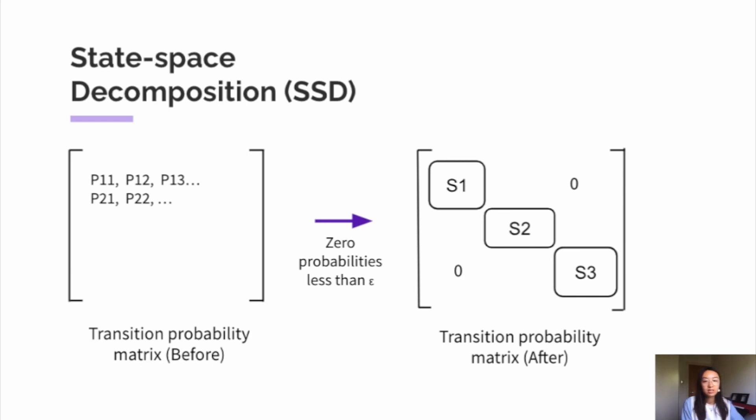However, since we set some of these probabilities to zero, we sacrifice accuracy in our learning as we have removed important information that could be vital to our optimal solution. Therefore, we can introduce an additional combining neural network which learns from transitions that take us between the different state subspaces.